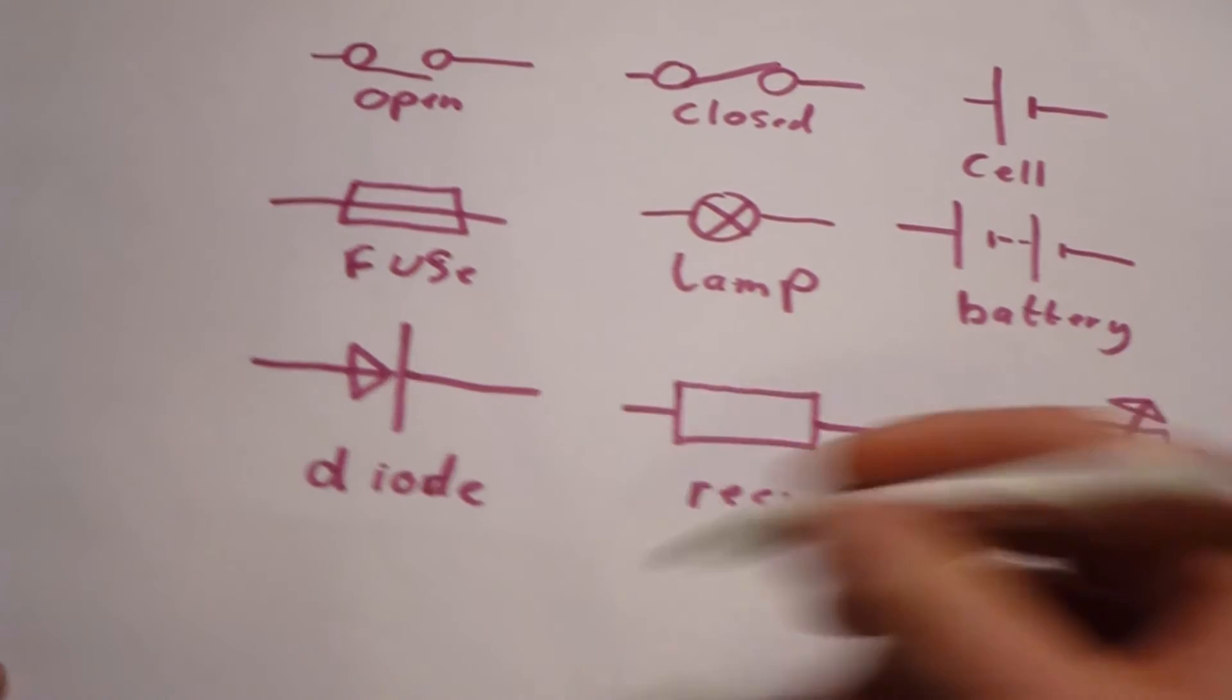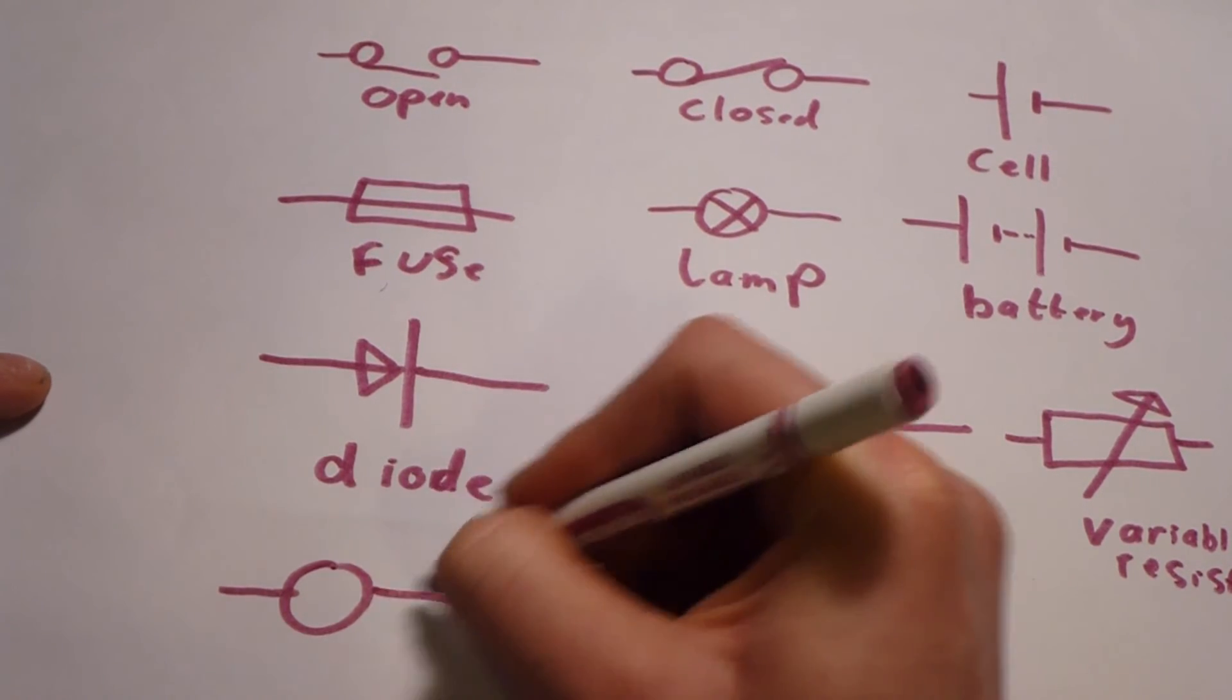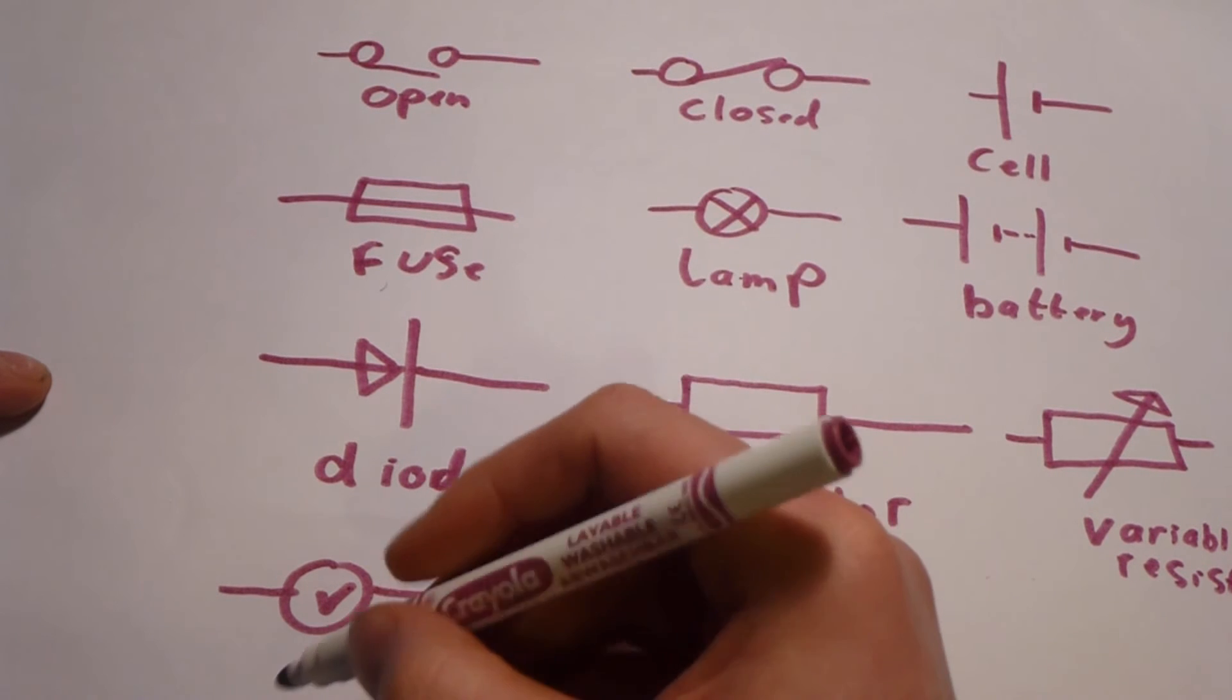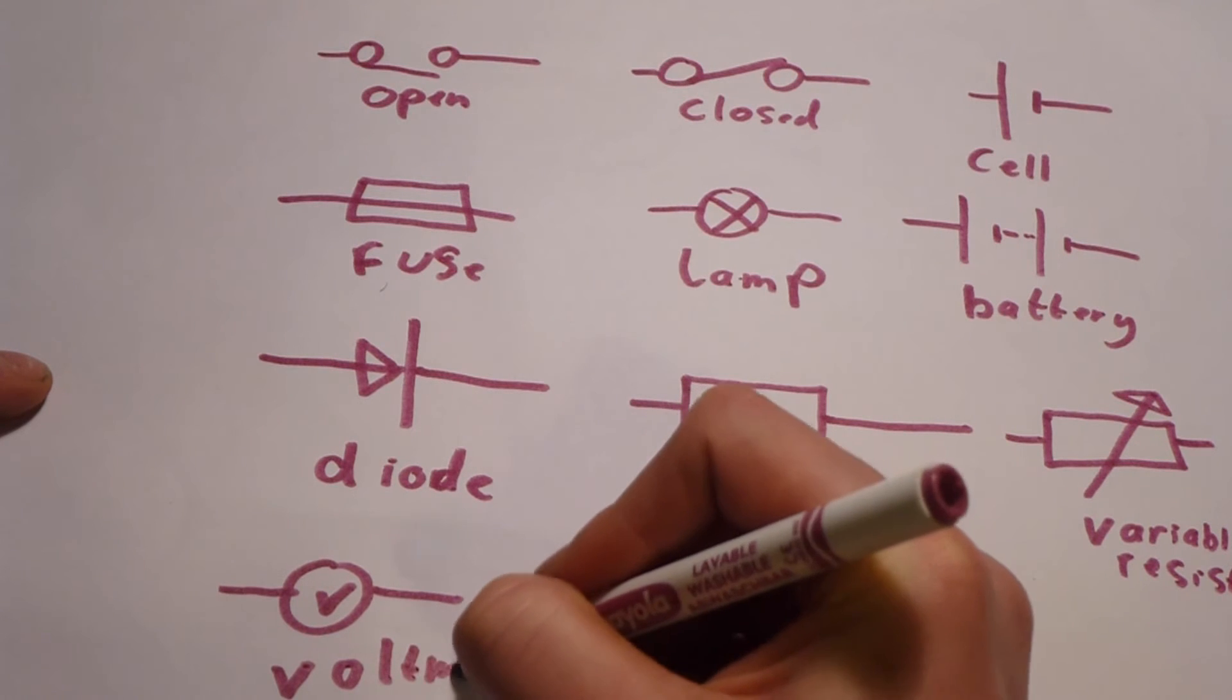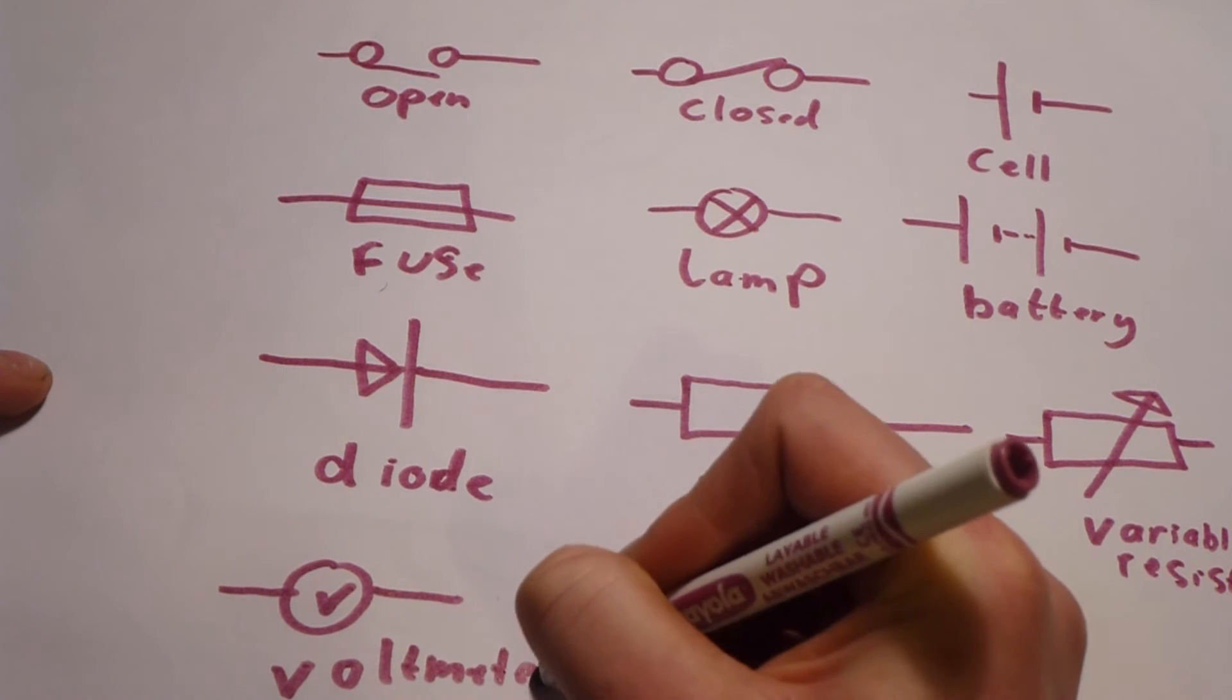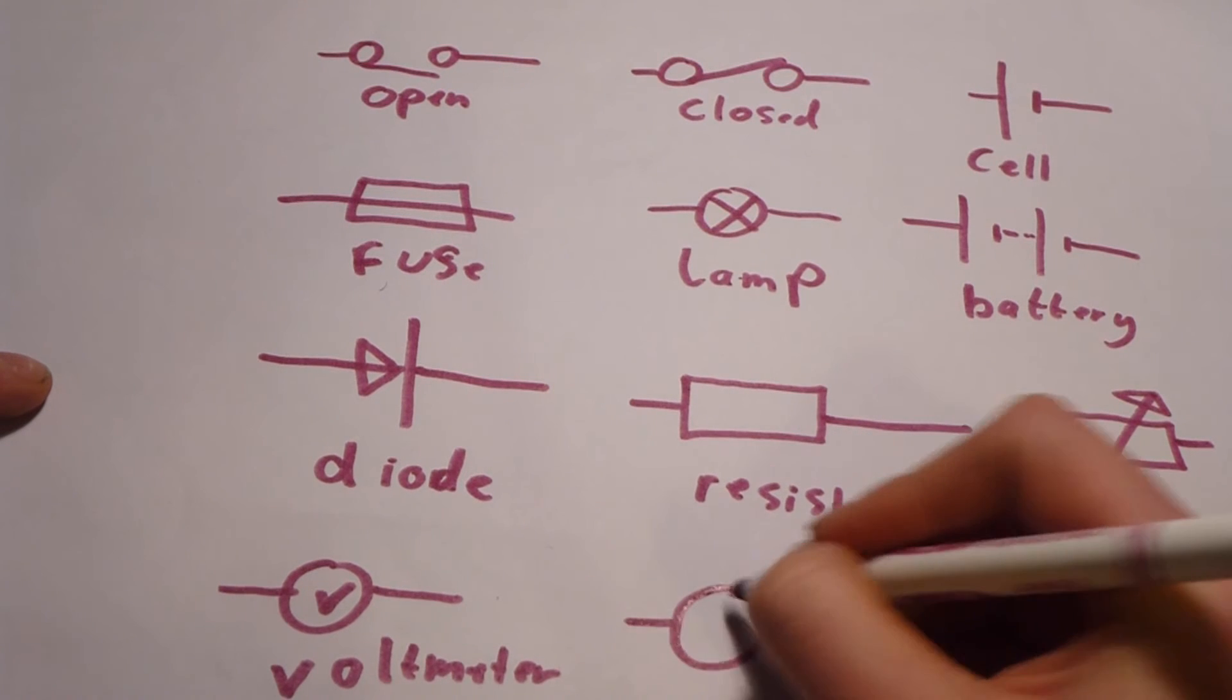After the resistor, we have a voltmeter, which is used to measure the potential variable through the circuit. After we have an ammeter, which is used to measure the charge.